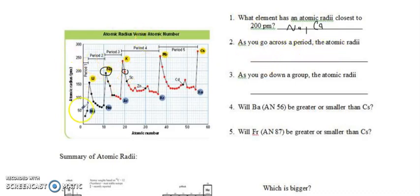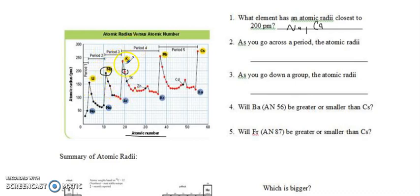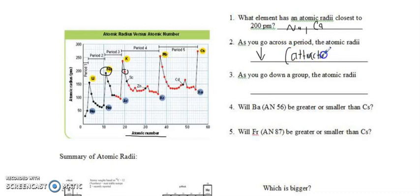Let's look as we go across a period. Atomic number is on the x-axis and atomic radius is on the y-axis. Across a period — that's a horizontal row. As I go across period two, my atomic radius is decreasing. Period three, decreasing. Period four, generally decreases with a few little blips. Period five, it's decreasing. So in general, as you go across a period, atomic radii go down because attraction is going up — we're staying in the same electron shell or energy level but adding more protons, so attraction goes up.